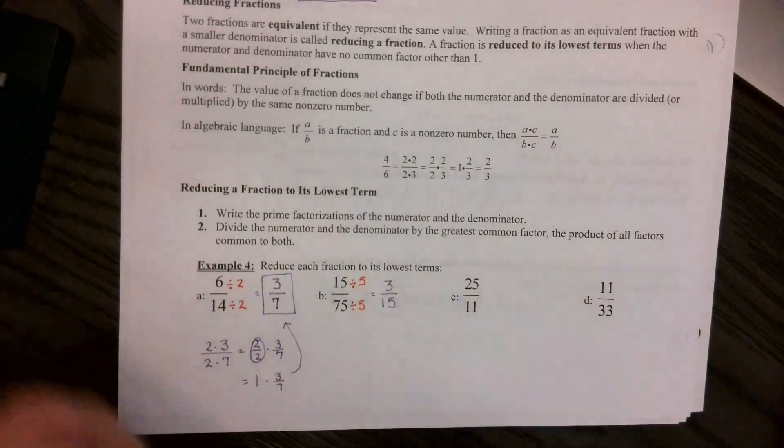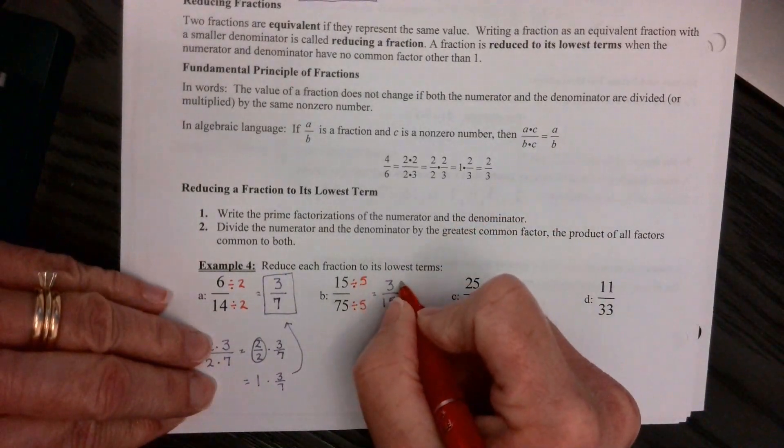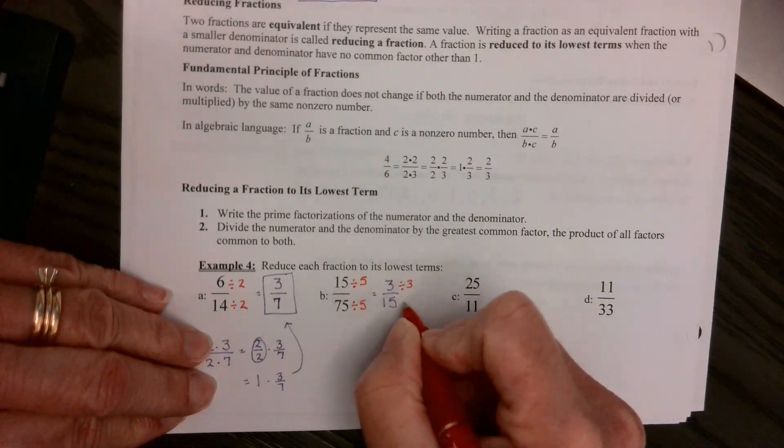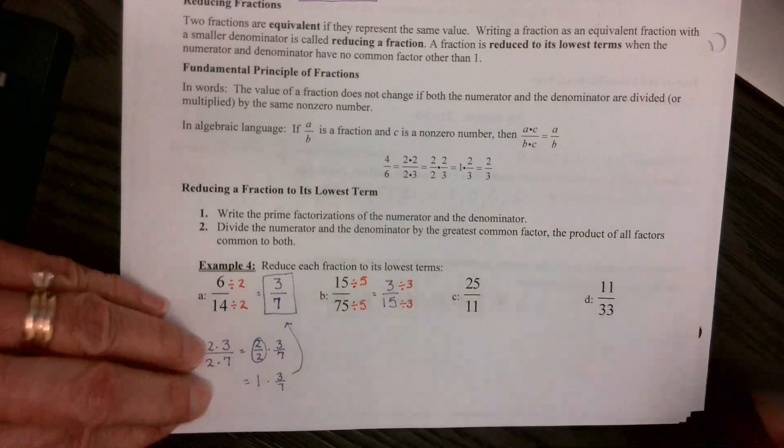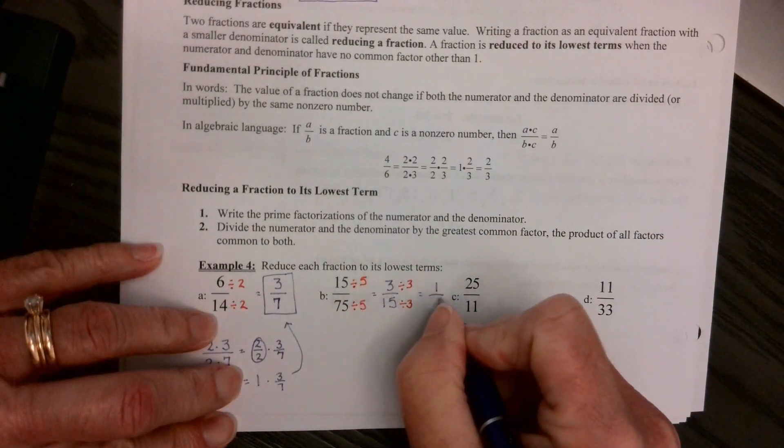Okay, yes, I did not pick the greatest common factor, I just picked a factor. So I'm just going to reduce again, divide both the top and the bottom by 3, and I end up with 1/5.